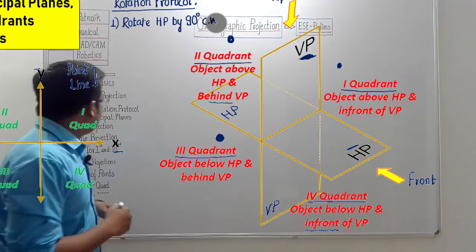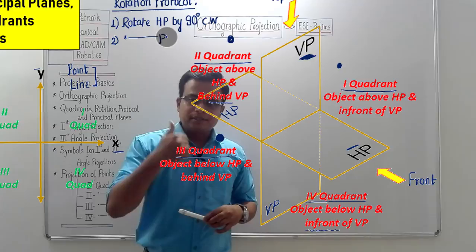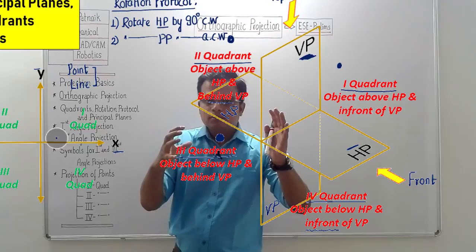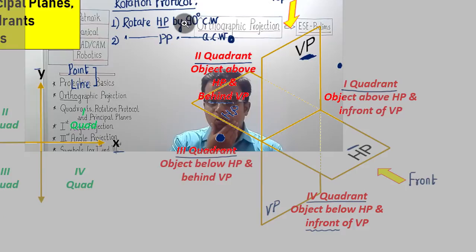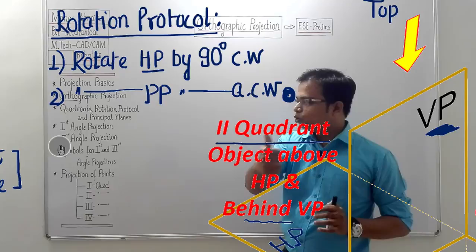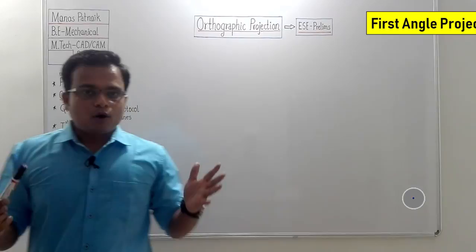So here are the two rotation protocols. Protocol number one: HP has to be rotated clockwise by an angle of 90 degrees. Protocol number two: PP, the profile plane — where you obtain the side view — has to be rotated 90 degrees in the anticlockwise sense. Remember these two protocols, as we are going to apply them in first angle and third angle projection.